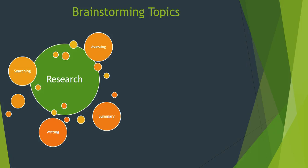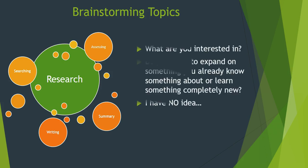Brainstorming for topics is not a linear process — it's twisty, there are a lot of steps, and it can be repetitive. So where can you look and what should you think about in creating a research topic? The first things to think about: what are you interested in? Do you have a specialty or something you already know? If so, maybe you want to expand on that, or do you want to learn something completely new?